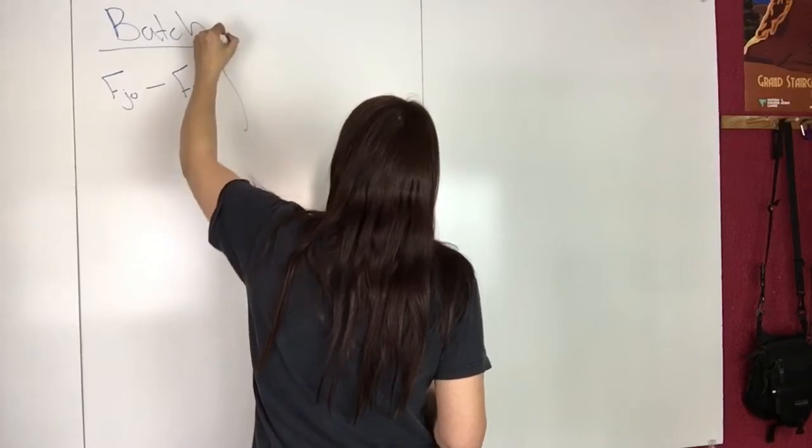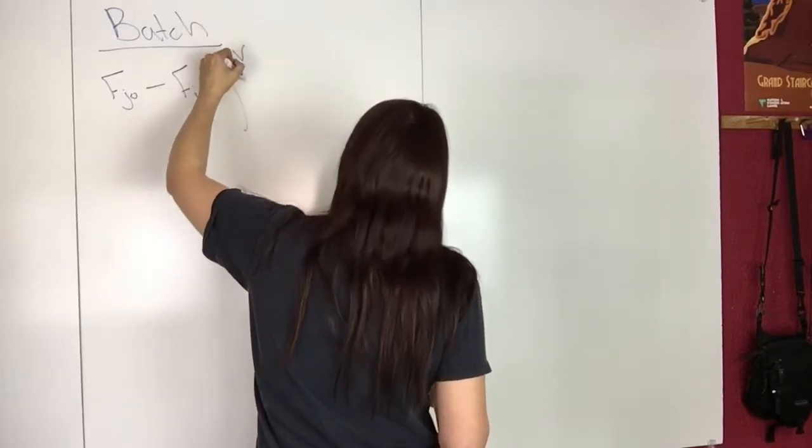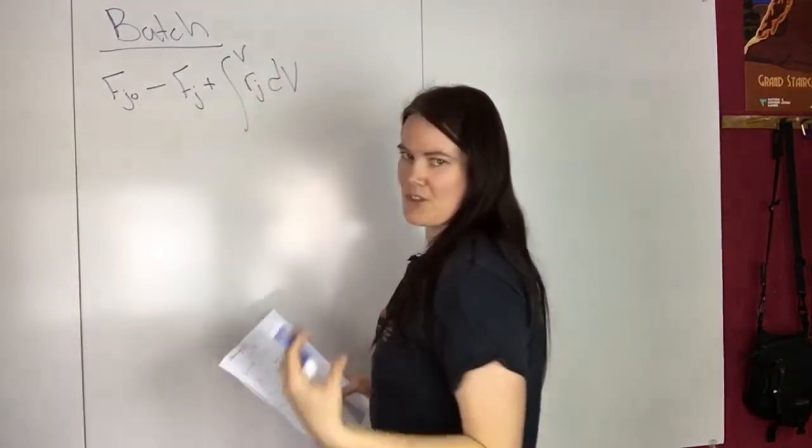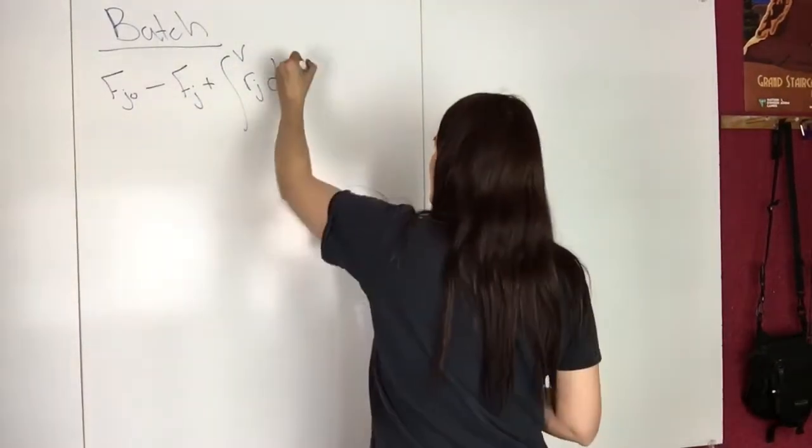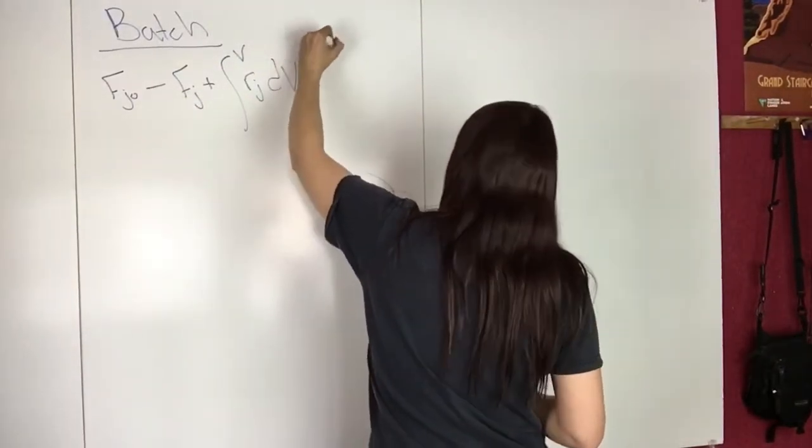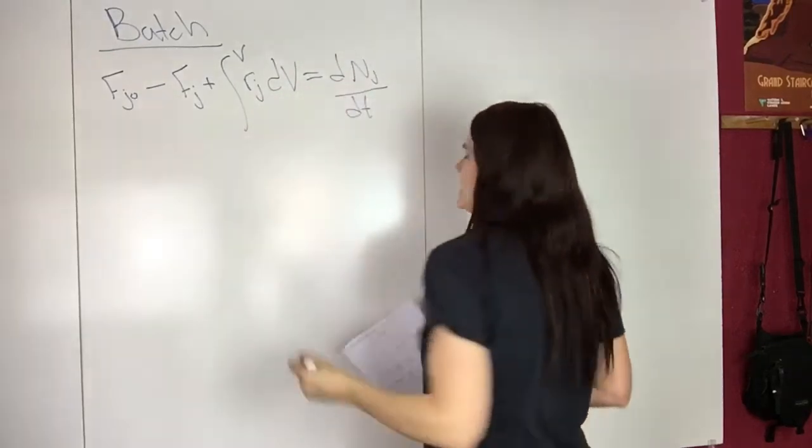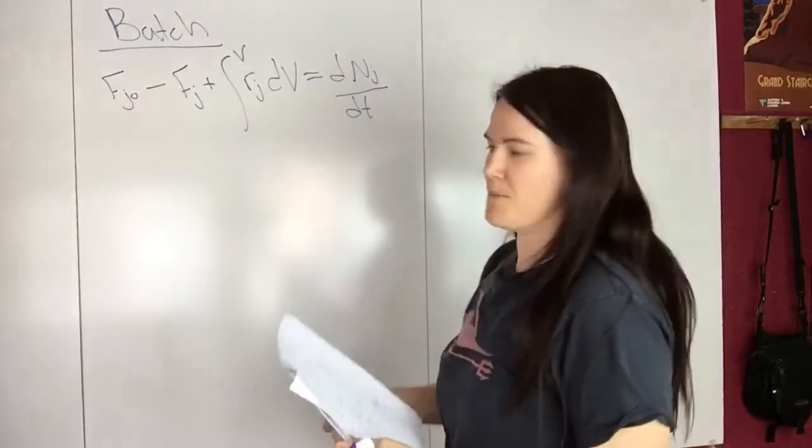plus the integral of V, RJ dV, whatever's being generated inside the reactor, equals dNJ/dt, whatever's accumulating with time.